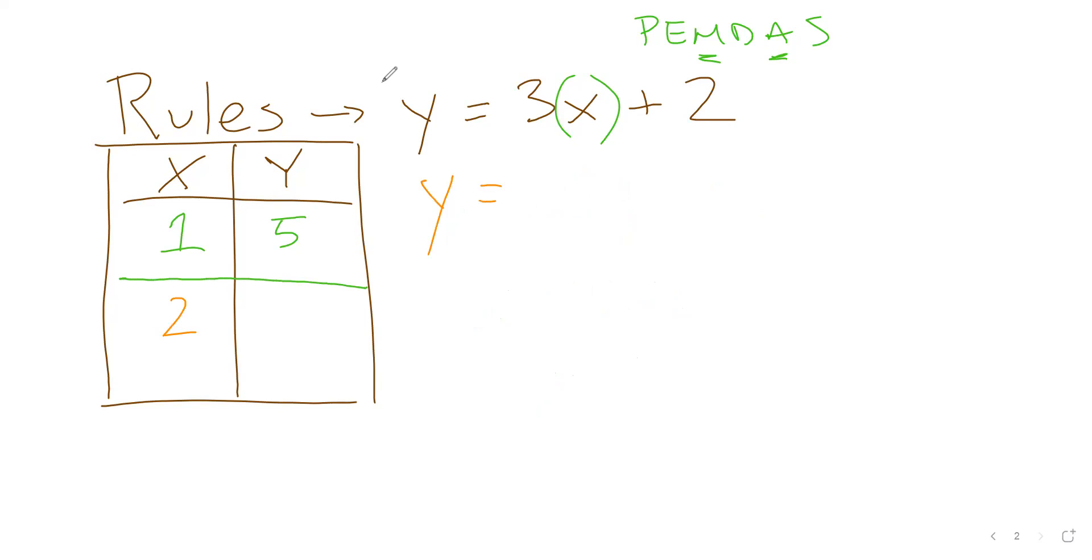But we can't graph anything if we only have one set of coordinates because then it's just one dot on a grid. So let's move on and try another one. Let's say, for example, we have 2. So we're going to do that same work. So if X is equal to 2, then Y is equal to 3 times 2 plus 2.